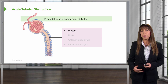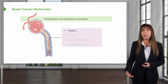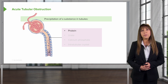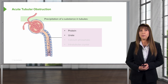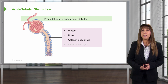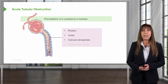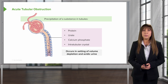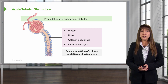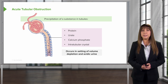There are a couple of different categories to consider. We can have protein from immunoglobulins — this would be the case of cast nephropathy. This can be urate, as in tumor lysis syndrome. We can have calcium phosphate precipitated in the tubules, which can occur after receiving a phosphorus-containing enema or laxative. Giving medications can also cause intratubular crystal precipitation. Importantly, this tubular obstruction almost always occurs in the setting of volume depletion and acidic urine.